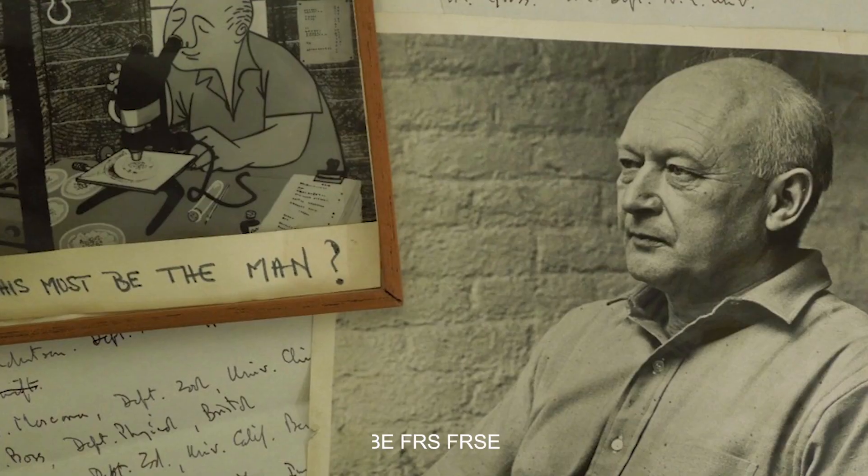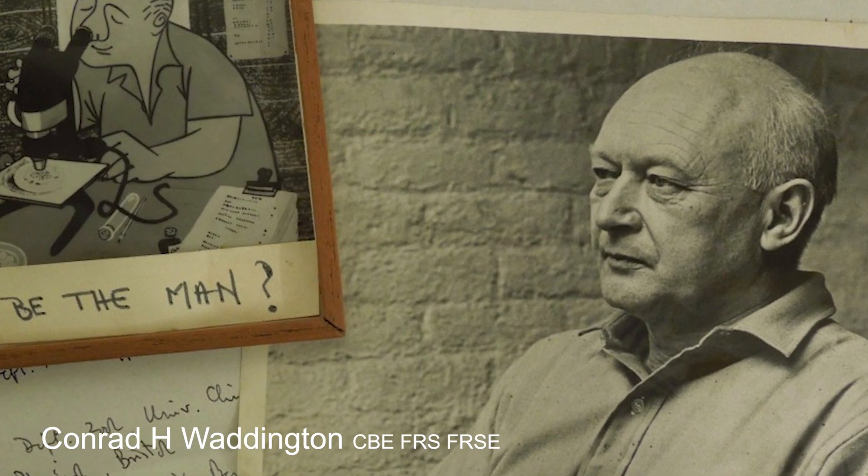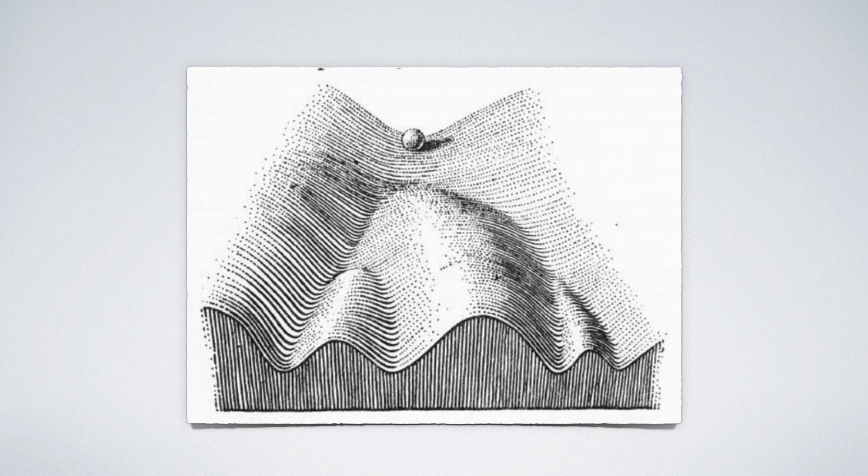In developmental biology, a very famous scientist known as Conrad Waddington came up with this idea of the Waddington landscape. This was published around 65 years ago, and it was a hand-drawn image of cells differentiating in a valley structure where you have stem cells at the top of the valley that gradually roll down into differentiated cells at the bottom.